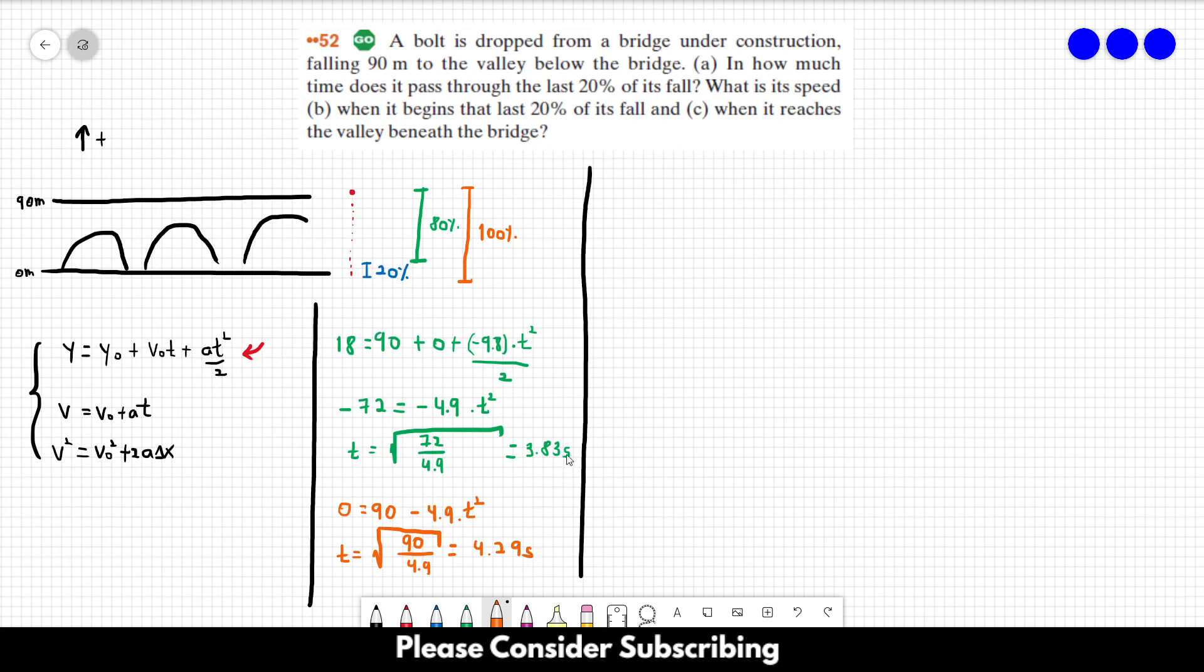So this is 100%. This is 80%. So if you want to know 20%, let's call it t20%. This would be equal to 4.29 minus 3.83. And this is equal to roughly 0.45 seconds. 0.46 seconds right? 0.46 seconds roughly. So this is the answer of letter A.